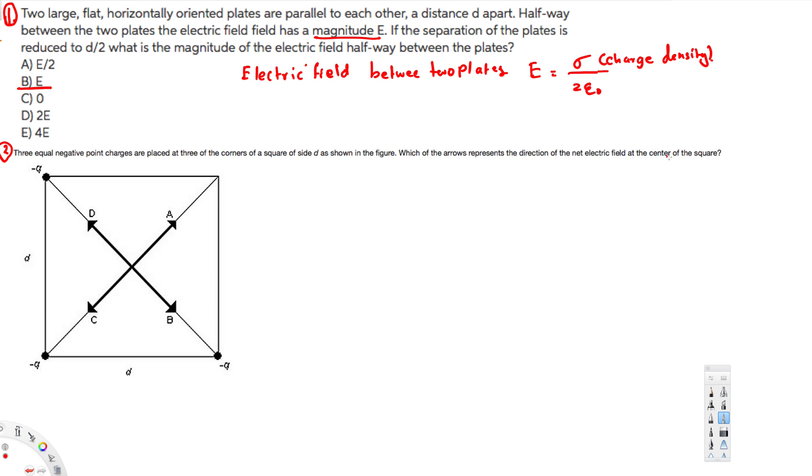of the net electric field at the center of the square? Okay, if you look at this one, we have a charge right here, right here, and right here. All of them are the same charges, negative q. The electric field is going toward each charge. Since these charges are equal, these